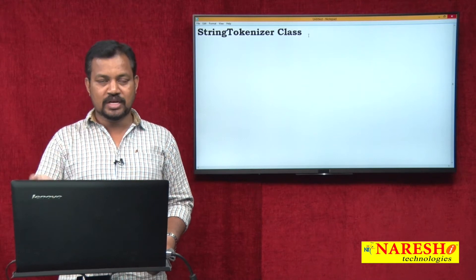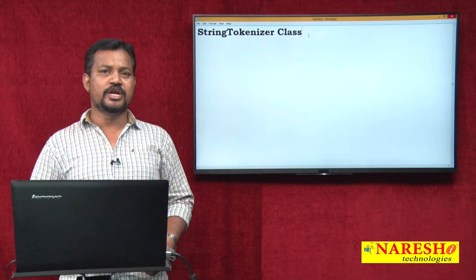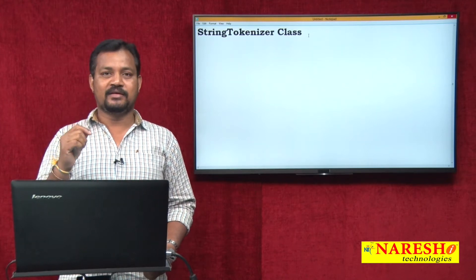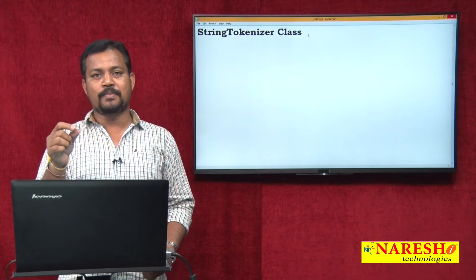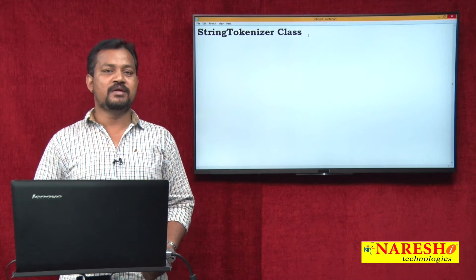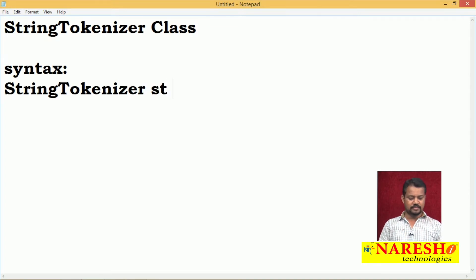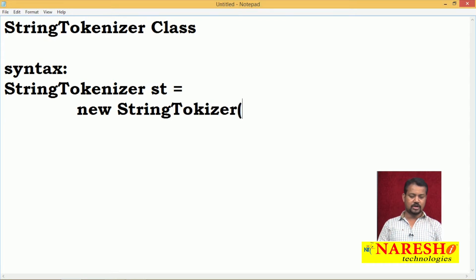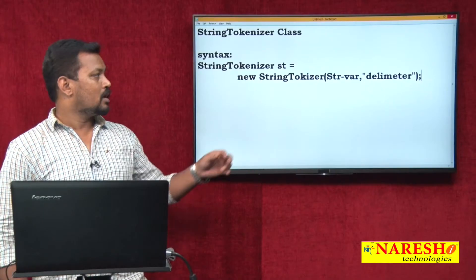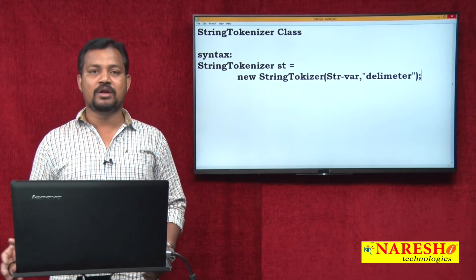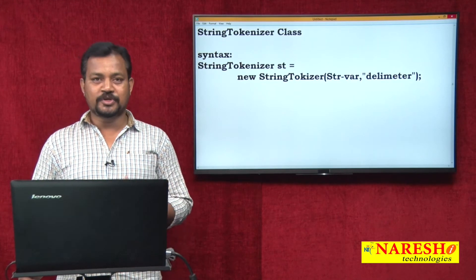By using the String Tokenizer class we can divide the string into pieces — break the string into pieces — based on some specification. The meaning of specification here is delimiter, meaning whether you want to break it by comma, full stop, or space. That is what we are calling the delimiter or specification.